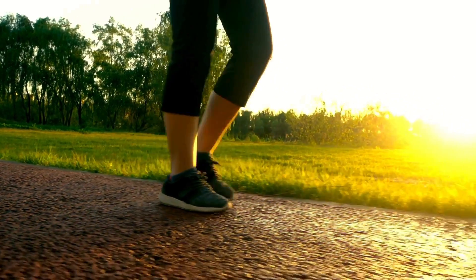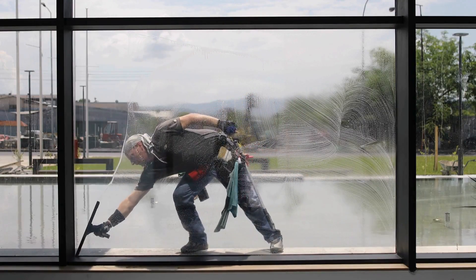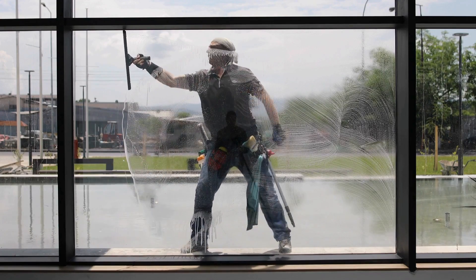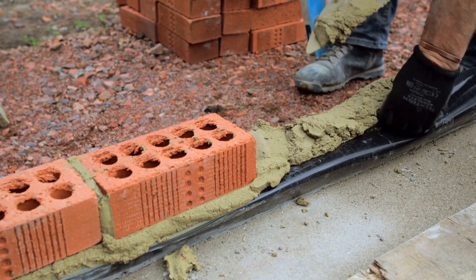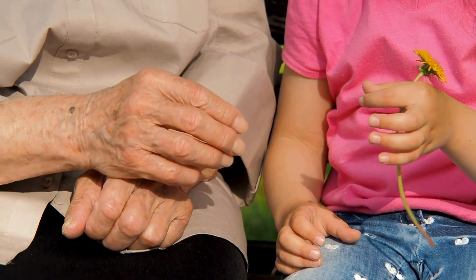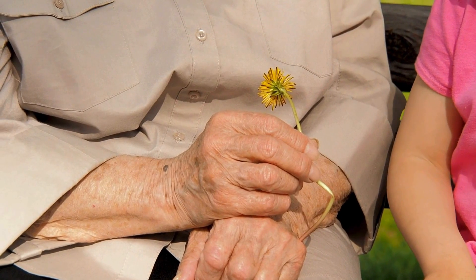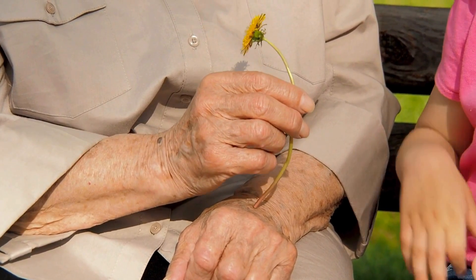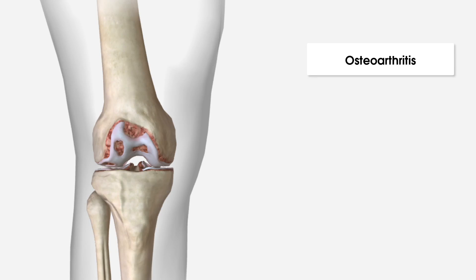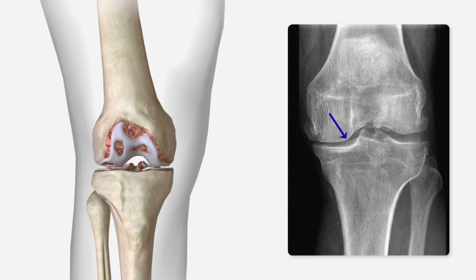Osteoarthritis is a condition affecting joints in a more mechanical manner — that means repeated activity over time, the way that our joint moves repeatedly over a long period of time, or the way in which weight gets distributed through the joint. This explains why we see this condition present more commonly in the older population. With osteoarthritis, the cartilage that covers our bones gets thinner over time, offering less protection to the bones at the joint. We sometimes see X-ray changes such as narrowing of the joint space or the presence of bony spurs.